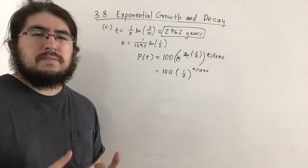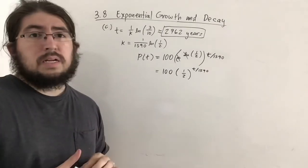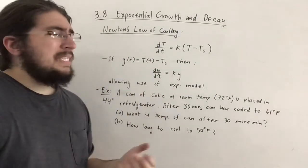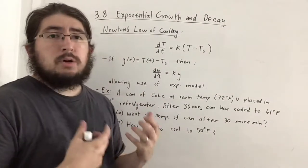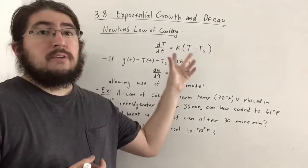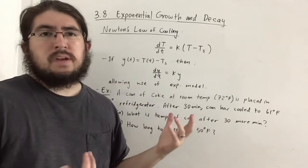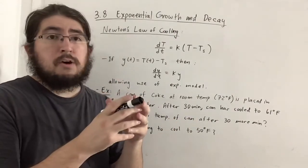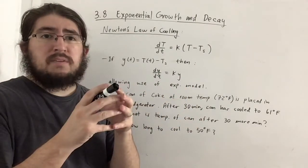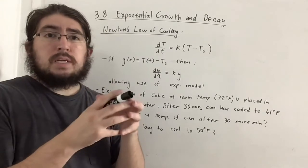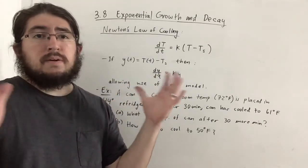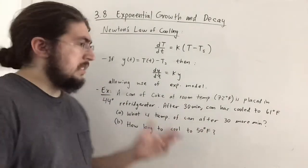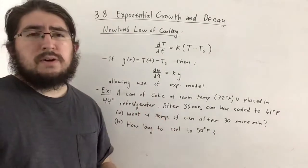Now we're moving on to a different topic: Newton's Law of Cooling. This basically says that the rate of change of temperature of an object is proportional to the difference between that object's temperature and the surrounding temperature. Examples include placing a turkey in an oven or a can of Coke in a refrigerator.